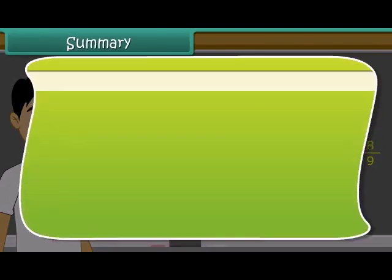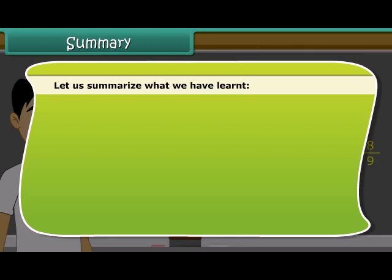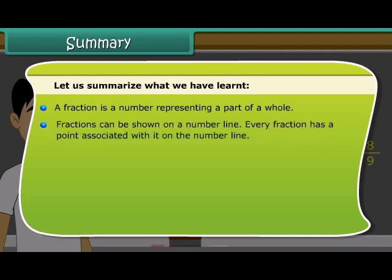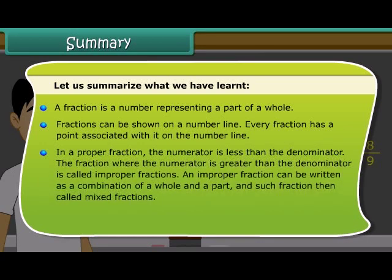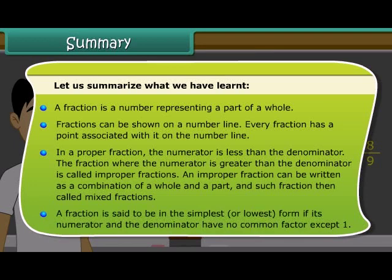Summary: Let us summarize what we have learned. A fraction is a number representing a part of a whole. Fractions can be shown on a number line. Every fraction has a point associated with it on the number line. In a proper fraction, the numerator is less than the denominator. The fraction where the numerator is greater than the denominator is called improper fractions. An improper fraction can be written as a combination of a whole and a part, and such fraction then called mixed fractions. A fraction is said to be in the simplest or lowest form if its numerator and the denominator have no common factor except one.